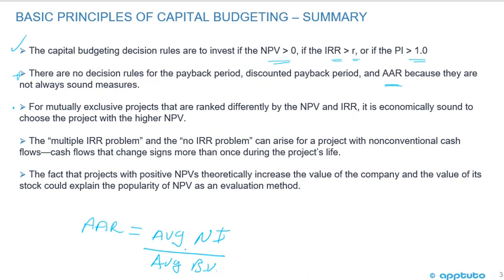For mutually exclusive projects that are ranked differently by NPV and IRR, it is economically sound to choose the project with the higher NPV. The multiple IRR problem and the no IRR problem can arise for a project with non-conventional cash flows — you can get more than one IRR or no IRR at all.